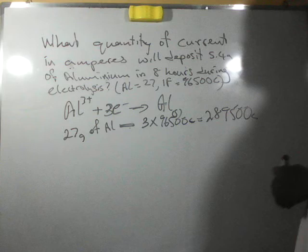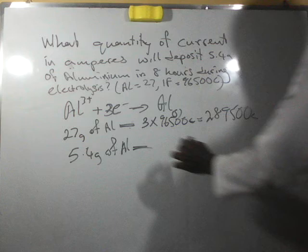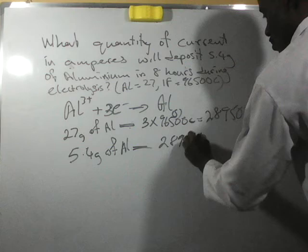Which is equivalent to 27 grams. Since this one is 5.4 grams of aluminum, this will be 289,500 divided by 27 times 5.4.